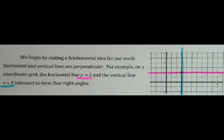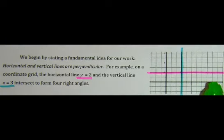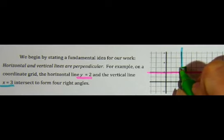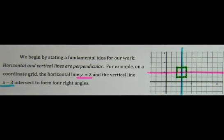Yesterday, when we reflected in 'Let's Get Away, Lizard', we referenced the fact that horizontal and vertical lines are perpendicular. In our first example, we have the horizontal line y equals 2 and the vertical line x equals 3. We could use a protractor to measure and discover that this intersection creates four right angles — 1, 2, 3, 4. So we can further define perpendicular lines as lines that intersect to form four adjacent right angles.